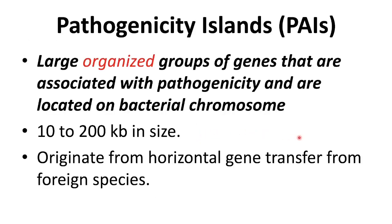Pathogenicity islands, or PAIs, are basically large organized groups of genes that are associated with pathogenicity and are located on bacterial chromosomes. They are typically 10 to 200 kilobase pairs in size, and interestingly they originate from horizontal gene transfer from some foreign species.